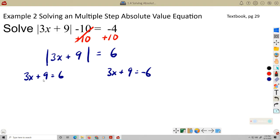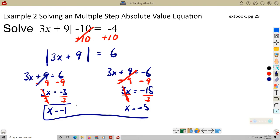3x equals negative 3. Dividing both sides by 3, x equals negative 1. On my negative case, I'm subtracting 9 from both sides. That leaves me 3x is equal to negative 15. Dividing both sides by 3, x equals negative 5. Both of these are my solution.